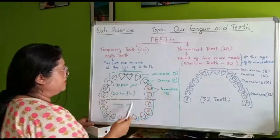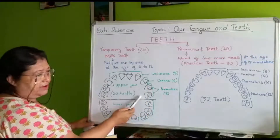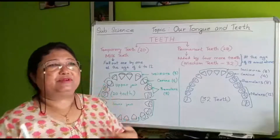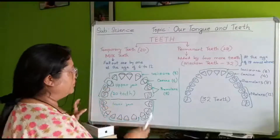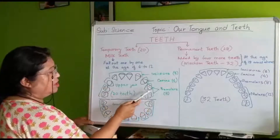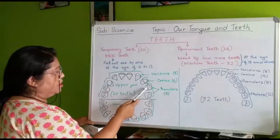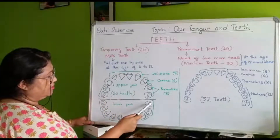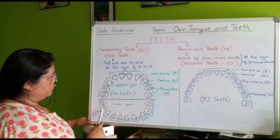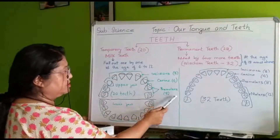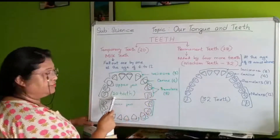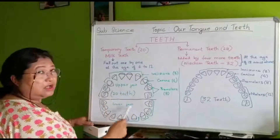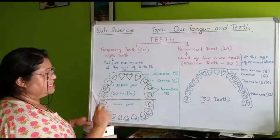Next come the pre-molars. After the canine teeth, at the back side we have pre-molars. In the upper jaw there are four pre-molars and in the lower jaw there are also four, so all together we have eight pre-molars. Combined with incisors and canines, we have 20 teeth total — 10 on the upper part and 10 on the lower part.